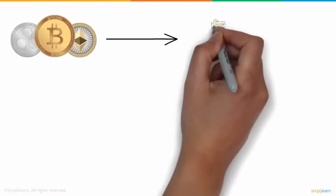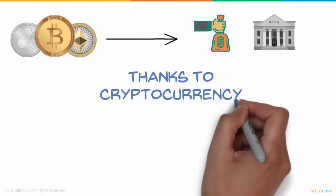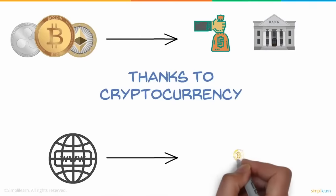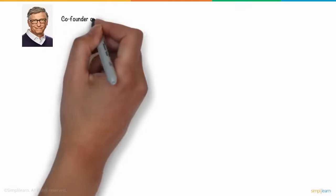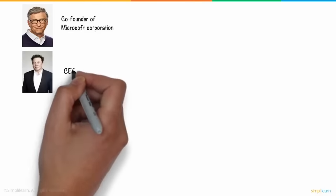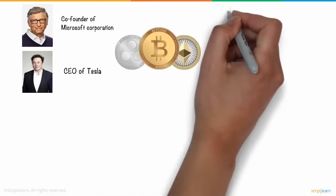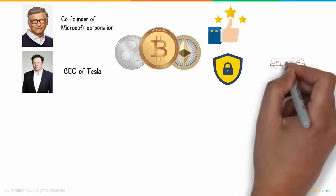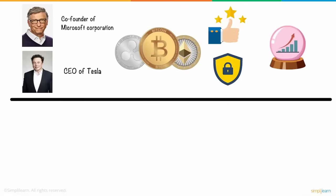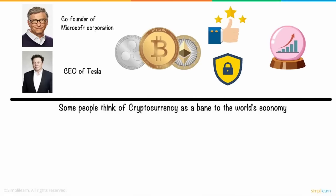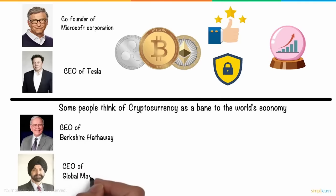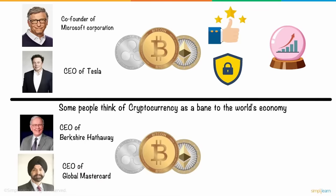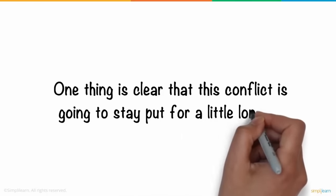Cryptocurrency is revolutionizing finance and banking around the world. Anyone with an internet connection can trade, spend, and borrow money globally, and nobody can stop them. People like Bill Gates, co-founder of Microsoft, and Elon Musk, CEO of Tesla, support cryptocurrency as it is much better and more secure than physical money and holds a great future for the world's economy. On the other hand, Warren Buffett, CEO of Berkshire Hathaway, and Ajay Banga, CEO of Mastercard, feel cryptocurrency is a platform for criminal activities and will destroy the world's economy.